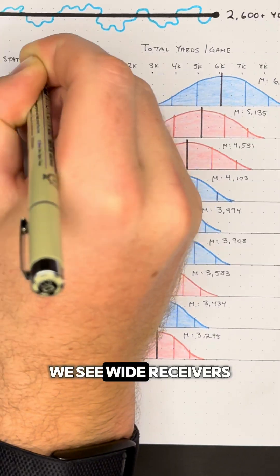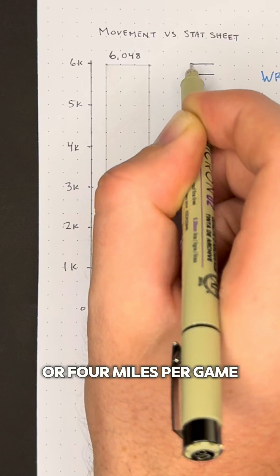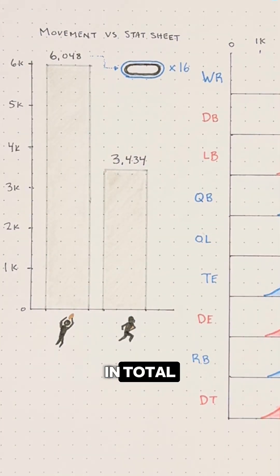At the very top of this list we see wide receivers who on average run just over 6,000 yards or 4 miles per game. Then near the bottom are running backs who average just 3,434 yards in total.